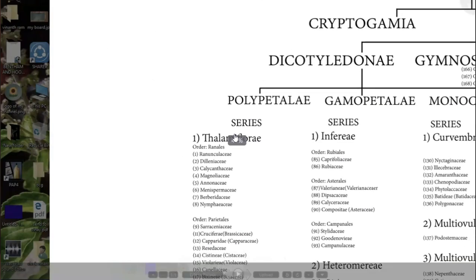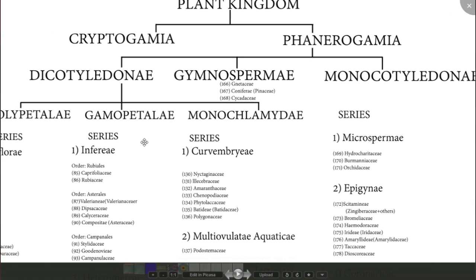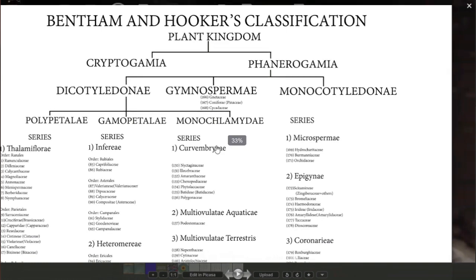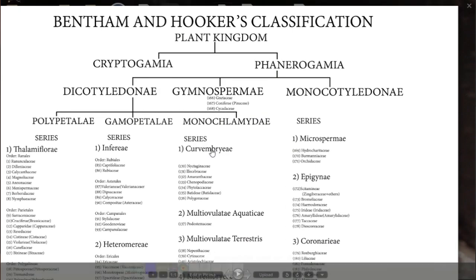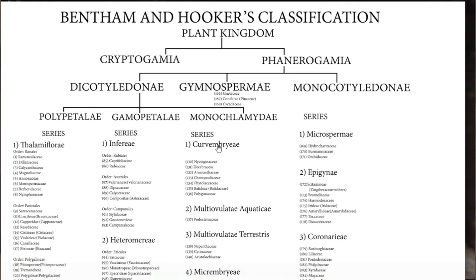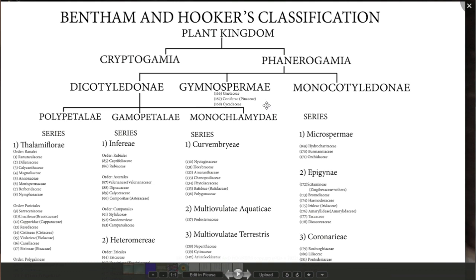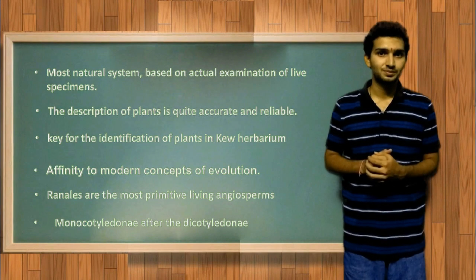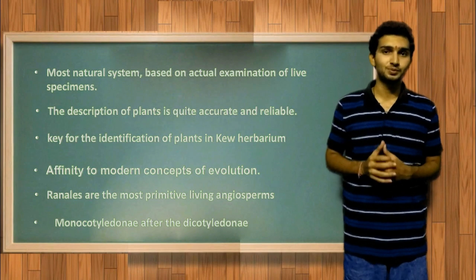The placement of monocotyledons after dicotyledons is another point where great changes have occurred, meaning monocots are derived from dicots. Taxonomic findings have accepted and supported this view.